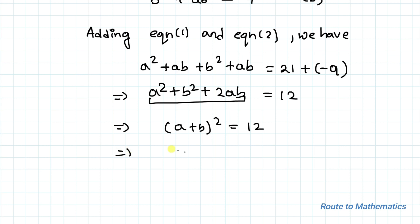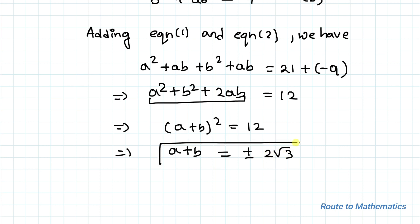Taking square root on both sides, we get a + b = ±2√3. Let's take this as equation 3.